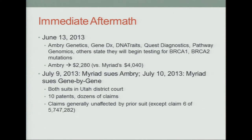In the immediate aftermath of the case, on the very day the decision came down, a whole array of providers announced they would begin testing for BRCA1 and BRCA2 mutations. AMBRI in particular announced a price about 50% below Myriad's, and not surprisingly, AMBRI was the first provider sued. Myriad had been alleging it had other patents to use even if it lost at the Supreme Court — and it did in fact sue on 10 other patents involving dozens of claims, none of which, with one exception, had been at issue in the Supreme Court case.